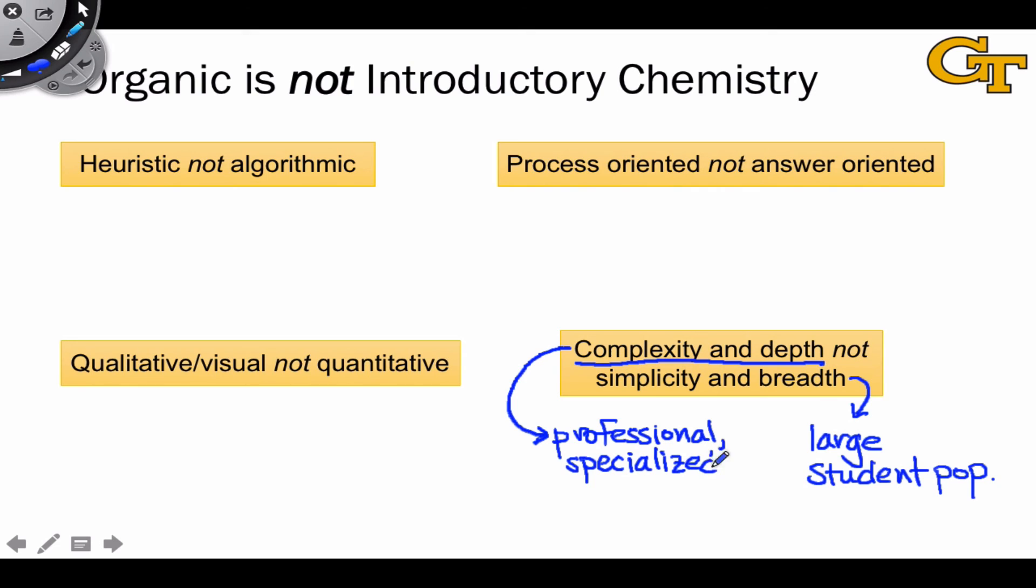And in particular, we're going to do things like, for example, take that idea of Lewis structures and really drill down deep into what a Lewis structure represents in terms of orbital theory and in terms of electron density and how to interpret a Lewis structure and infer reactivity from it. So it's about complexity and depth. And you want to keep that in mind as well, moving through organic chemistry, that it's less about generalized understanding and more about specialization.